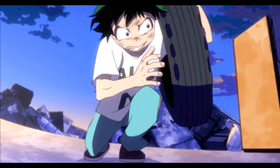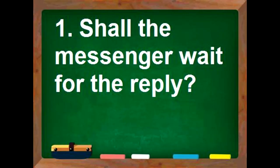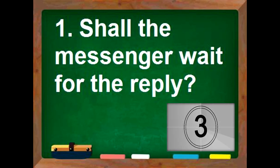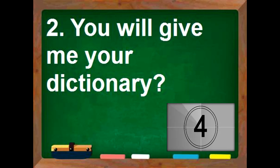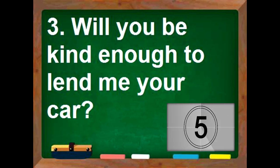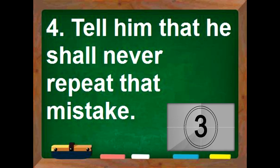Now let's have an activity. I'm going to read a sentence and you're going to say true if the sentence is properly changed to its simple future tense, and false if it is not. Number 1: Shall the messenger wait for the reply? — If your answer is true, then you are correct. Number 2: You will give me your dictionary? — If your answer is false, then you are correct. Number 3: Will you be kind enough to lend me your card? — If your answer is true, then you are correct.